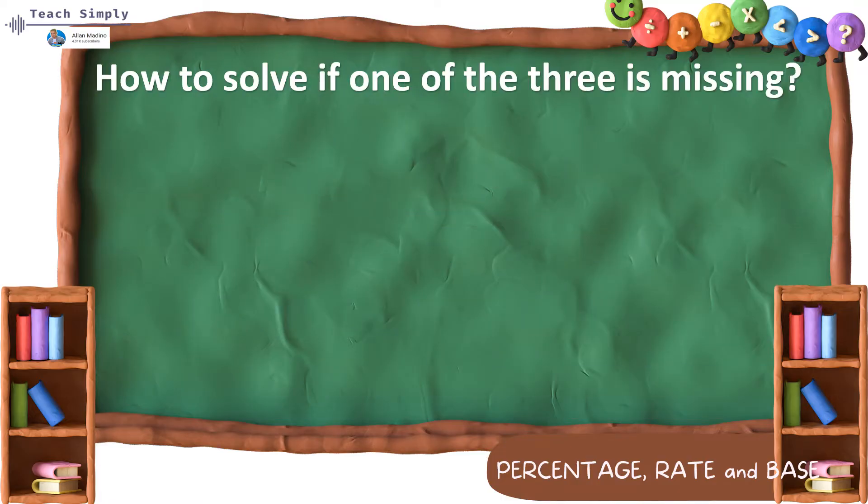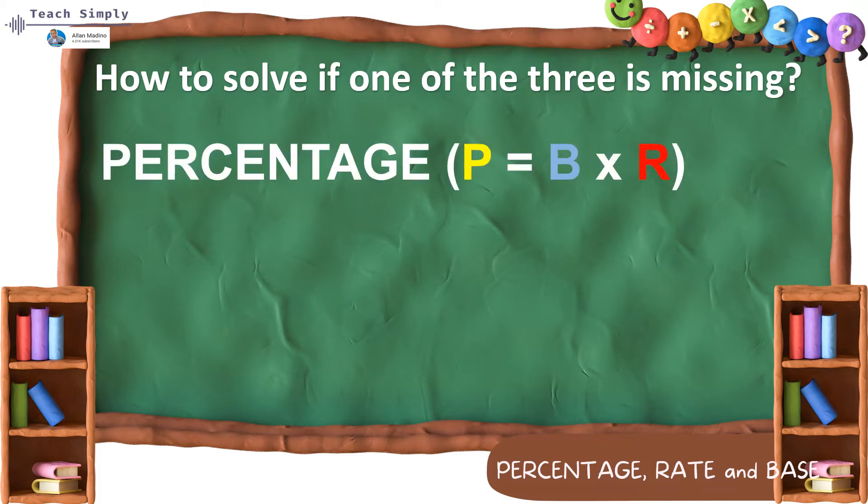Now, how are we going to solve if one of the three is missing? Paano natin isosolve kung isa sa tatlo ay nawawala? So, meron tayong tatlong formula. Halimbawa, kung si percentage ang nawala, this is our formula. P is percentage equals base times rate. Again, kung mawawala si percentage, this is our formula. Percentage equals base times rate.